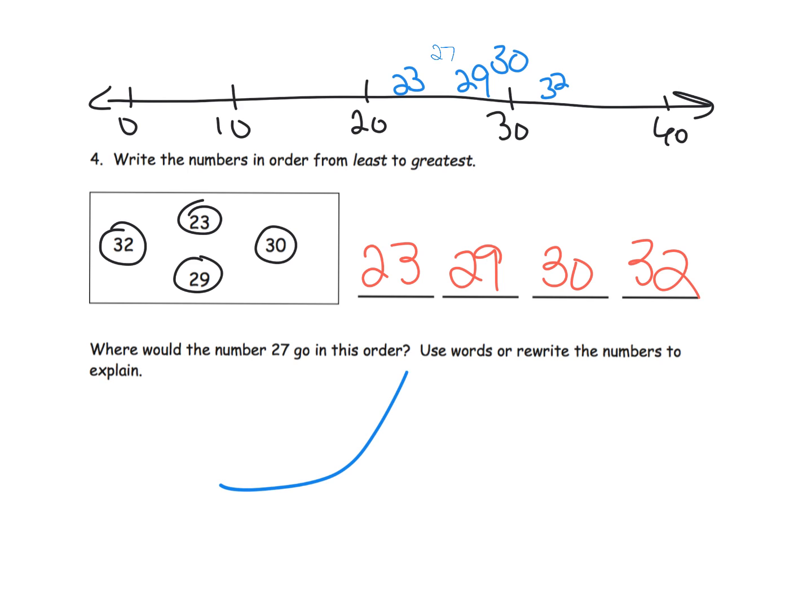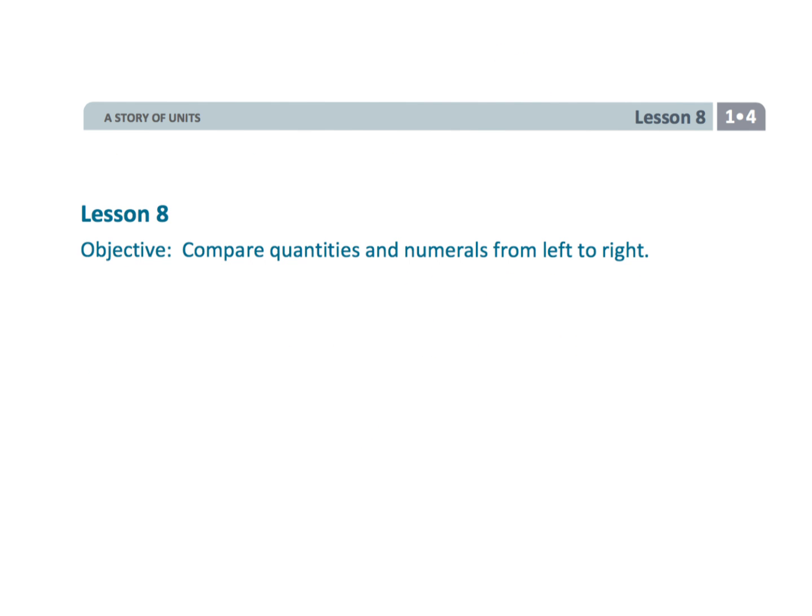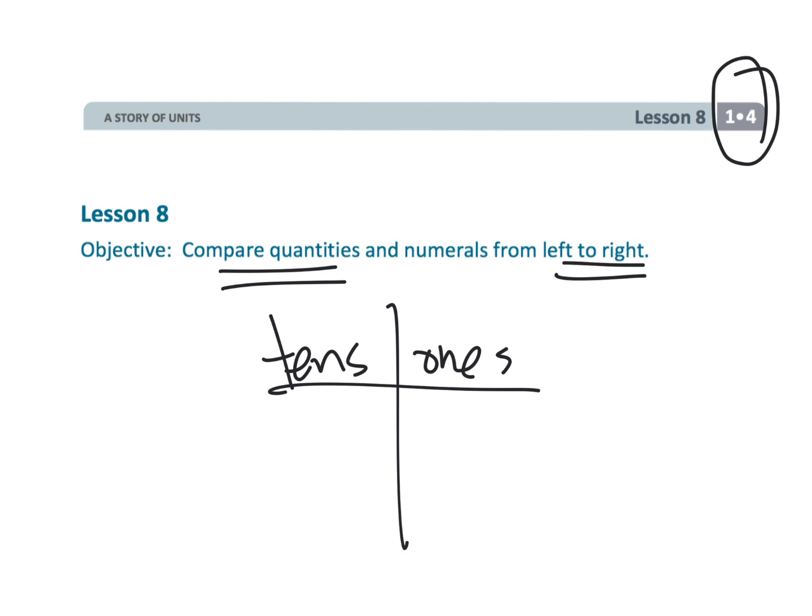And that wraps up a very interesting one using number lines to help us compare quantities as we look at those numbers from the left digit to the right digit, the tens place then we're looking at the ones place in order to compare numbers. So that's lesson eight.